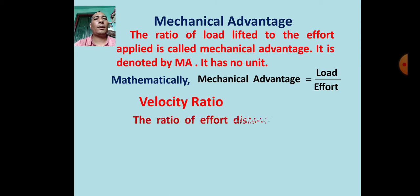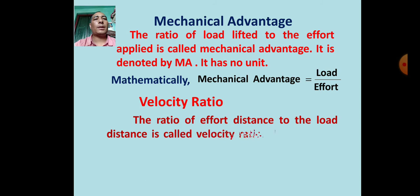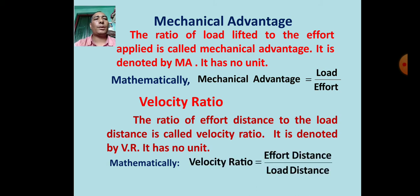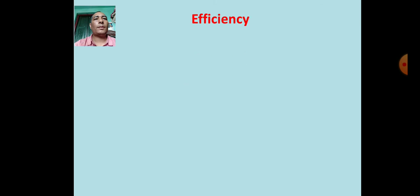The ratio of effort distance to the load distance is called velocity ratio. It is denoted by VR and has no unit. Mathematically, velocity ratio equals effort distance upon load distance: VR = ED / LD.